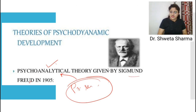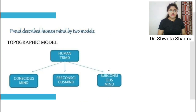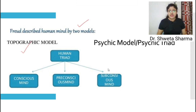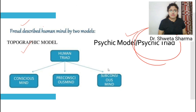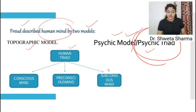The psychosexual theory is the psychoanalytic theory given by Sigmund Freud, so the question may say psychoanalytic theory or psychosexual theory — both refer to the same. Freud described the human mind into two models: the first is the topographic model, and the second is the psychic model, which we call the psychic triad. The third exam question on psychic triad will also be covered here.